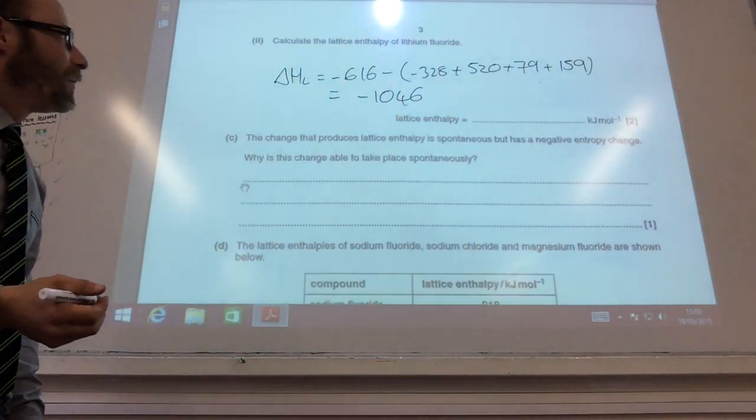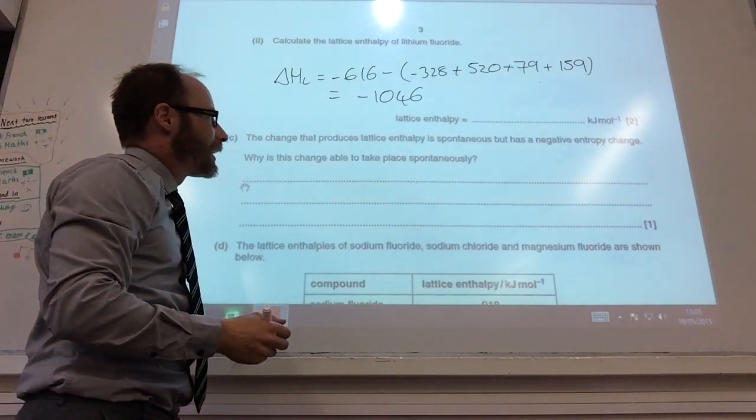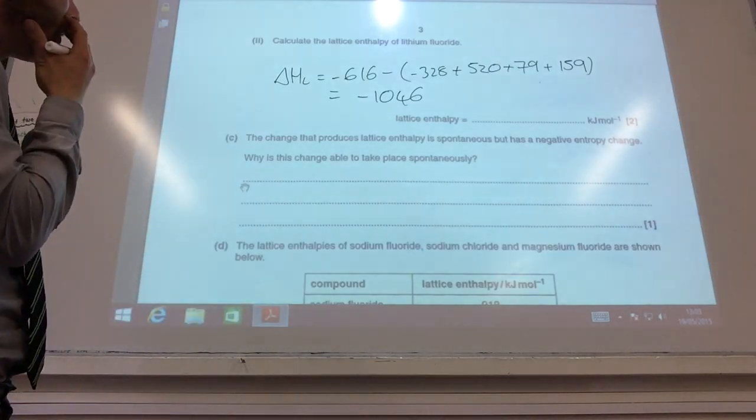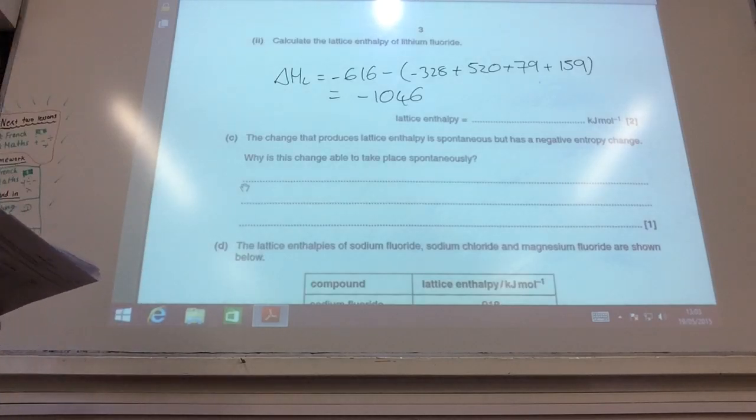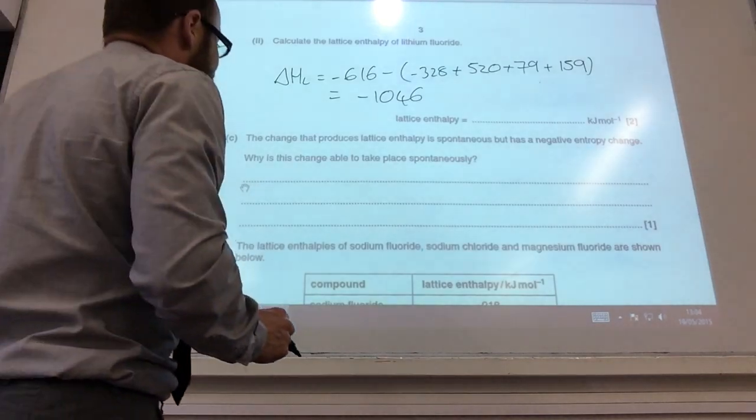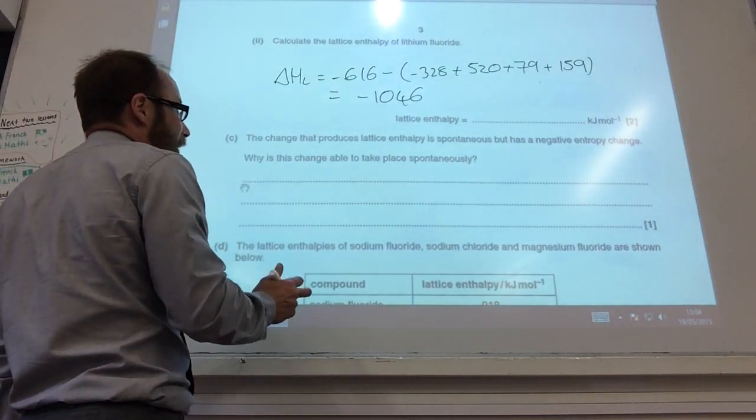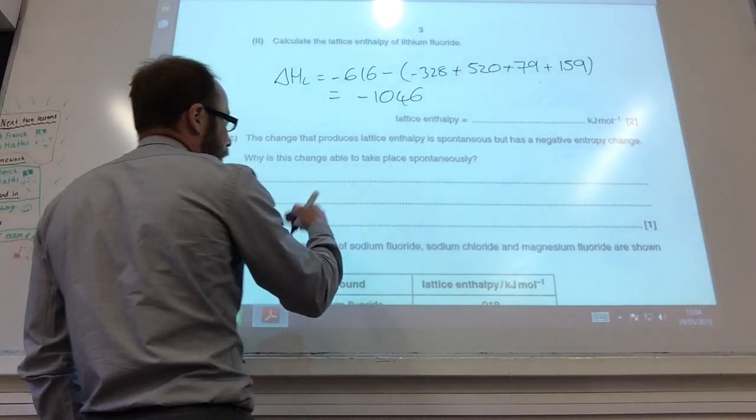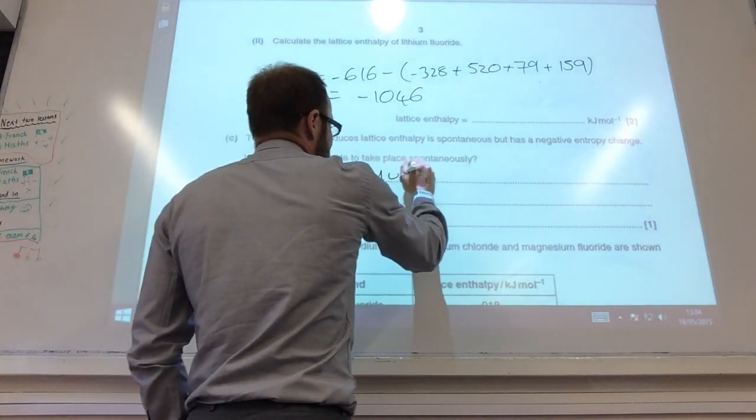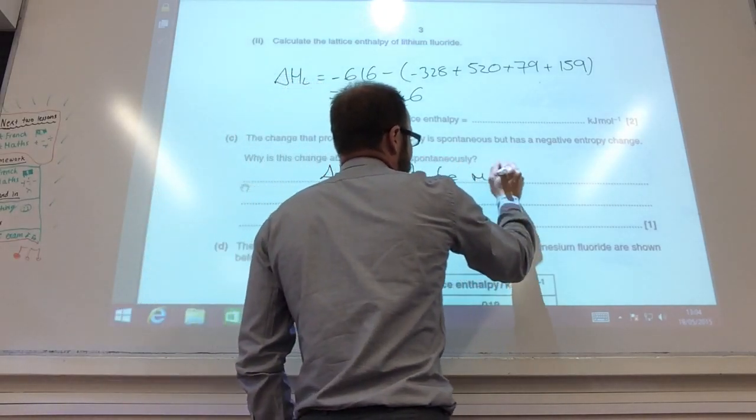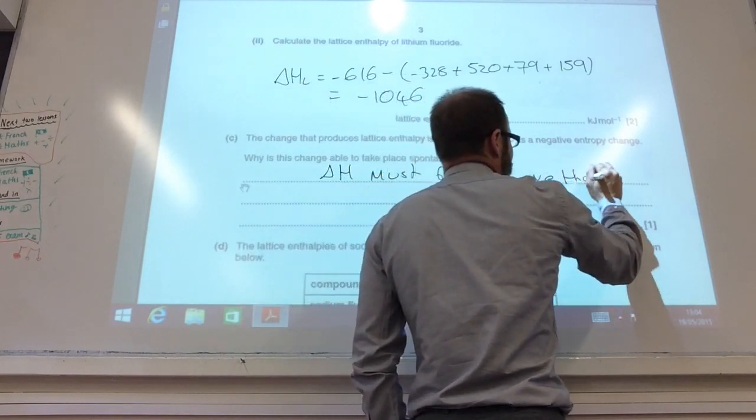If you do all of that you should get 1046 kilojoules per mole. This change produces is spontaneous but has a negative entropy. Why does this change take place spontaneously? Well it must take place spontaneously because delta G has to be negative, so we know that delta H must be more negative than T delta S to make sure that takes place.